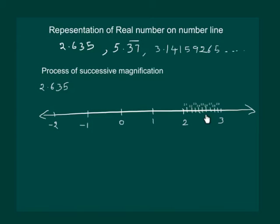And 2.635 means the number lies between 2.6 and 2.7. So let us magnify 2.6 and 2.7 and divide it into 10 equal parts.